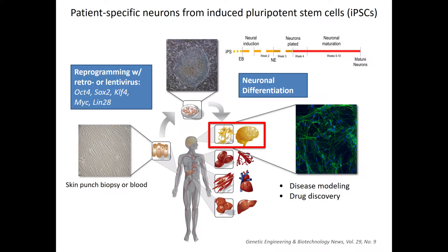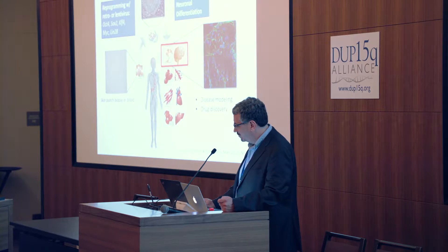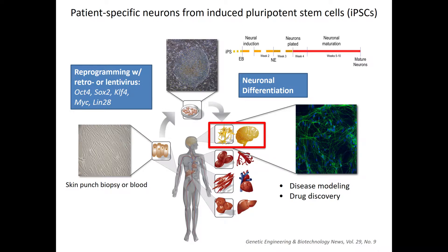We're using neurons derived from patient-specific induced pluripotent stem cell lines. I got into this work through a collaboration with Dr. Stormy Chamberlain, who had obtained these IPS lines to look at the genetics and mechanisms of genomic imprinting. We basically start with fibroblast skin samples or blood samples that are then infected with transcription factors that put them in a pluripotent state. They can then be differentiated into any cell type in the body — we're specifically interested in neurons — to study disease and potentially drug discovery.